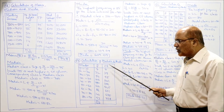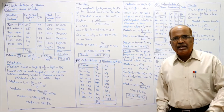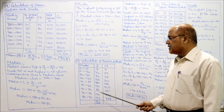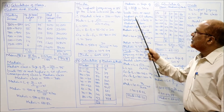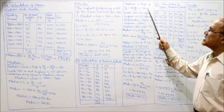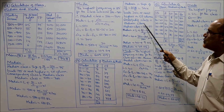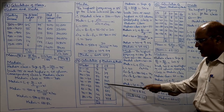Since mean is not required, mid values are not needed — only CF is enough. CF: 7, 7+32=39, 39+56=95, and so on. Median class: N/2 = 728/2 = 364. Locate 364 or next higher in the CF column — corresponding class is the median class. The next higher to 364 is 381.